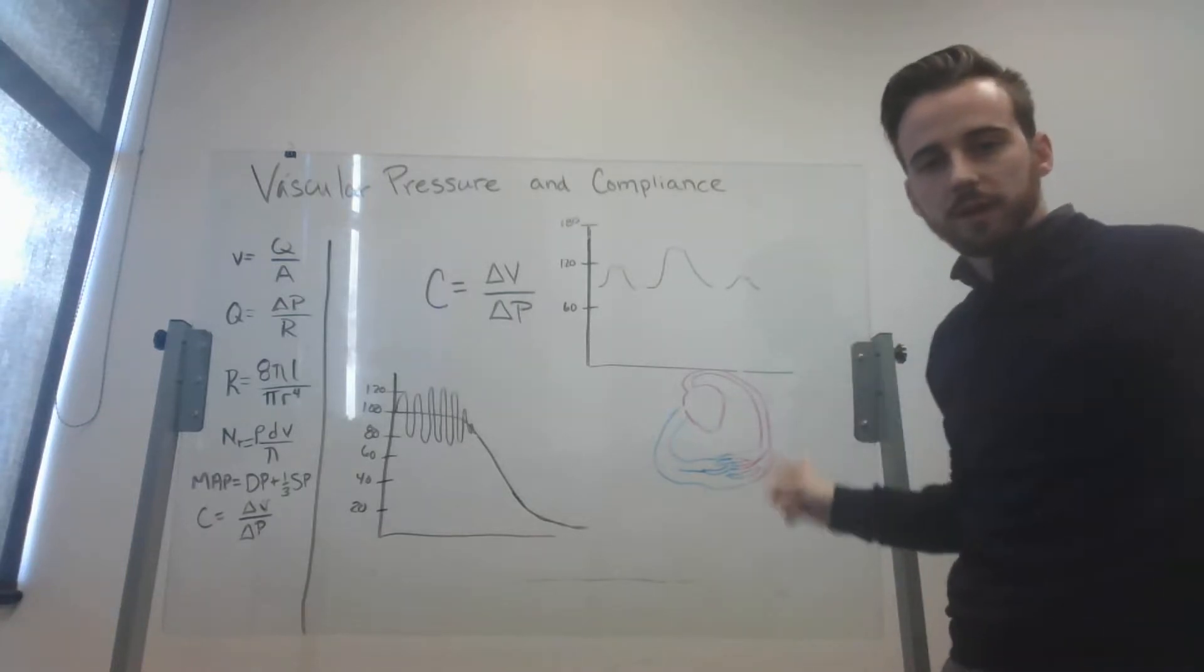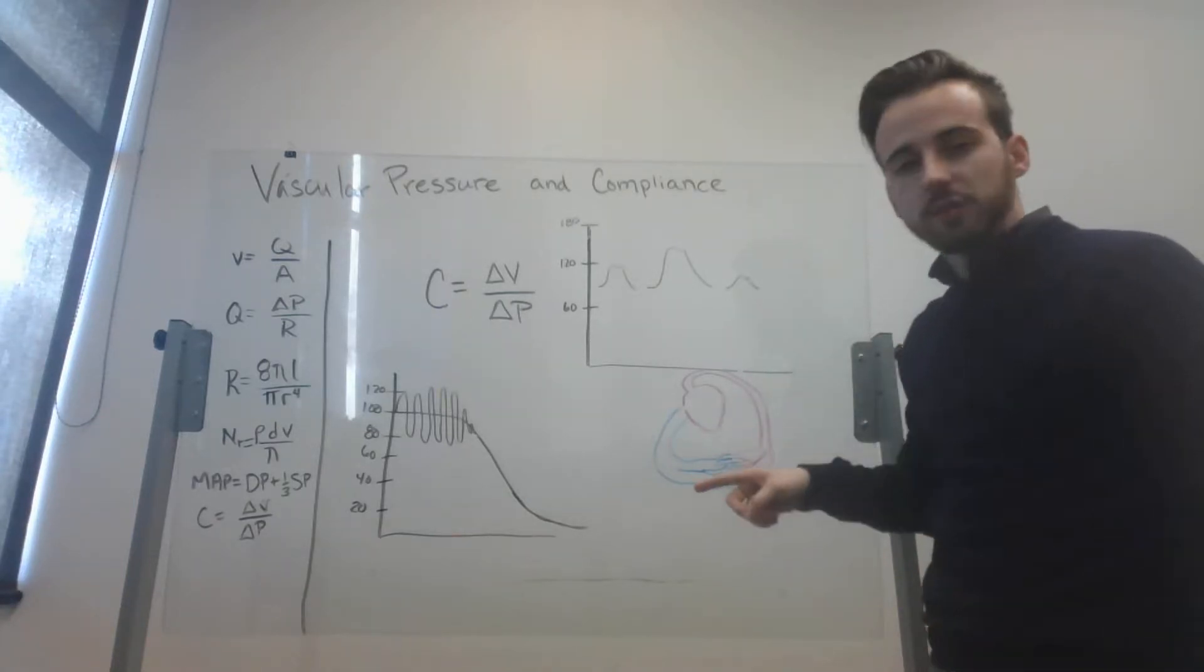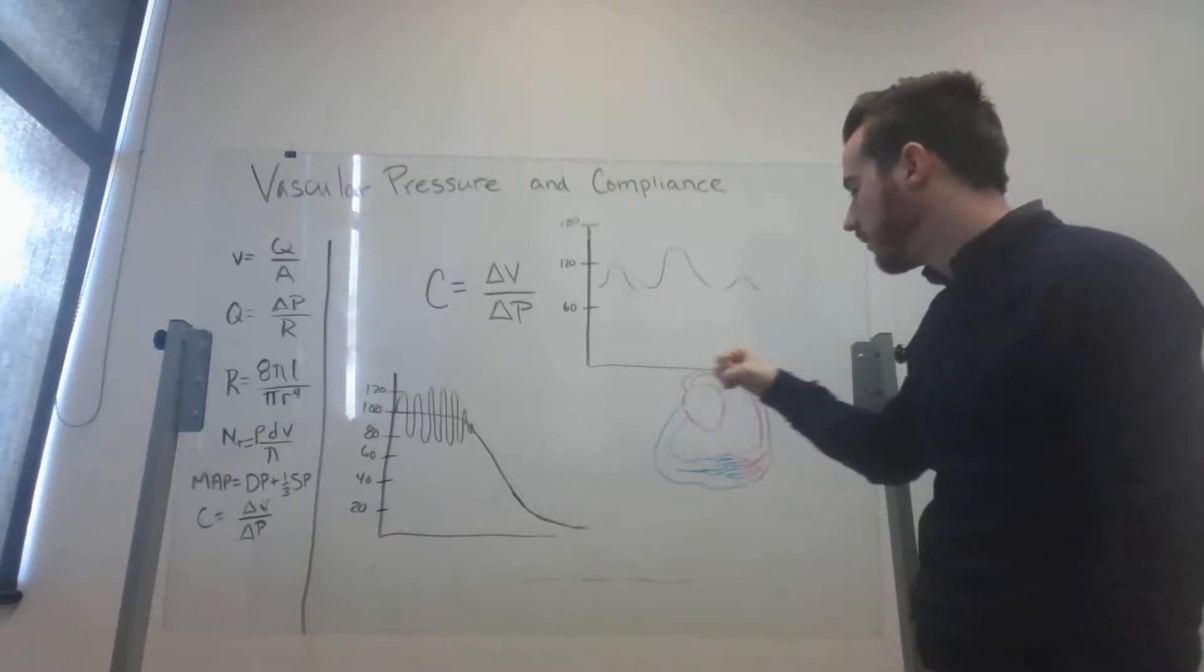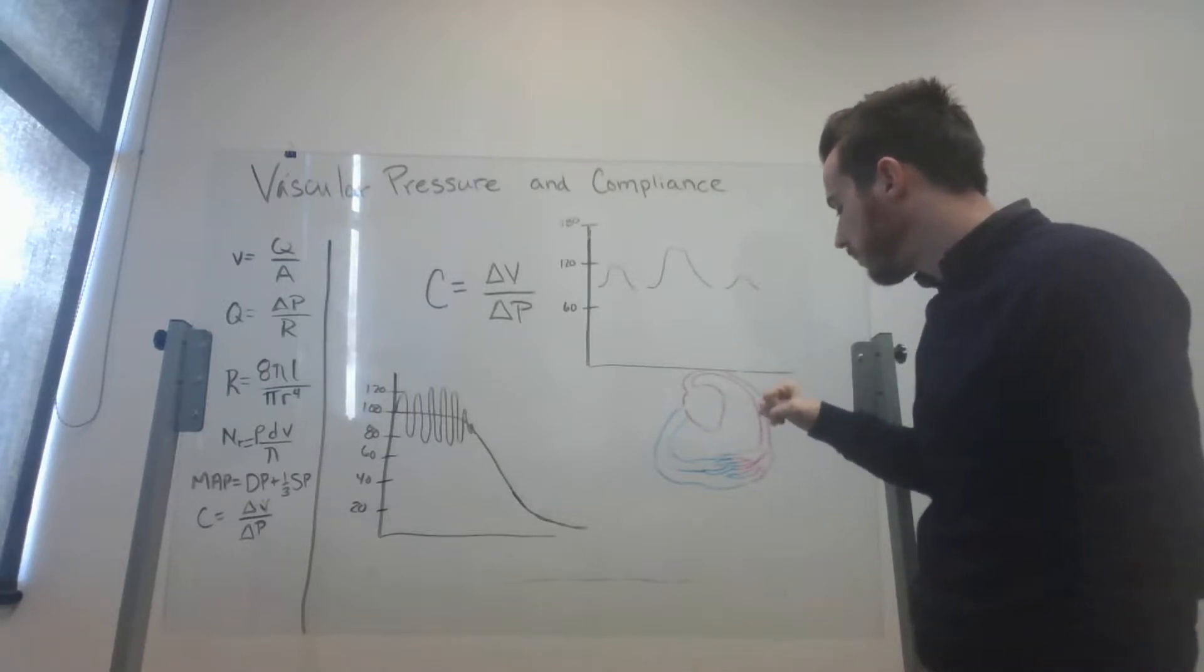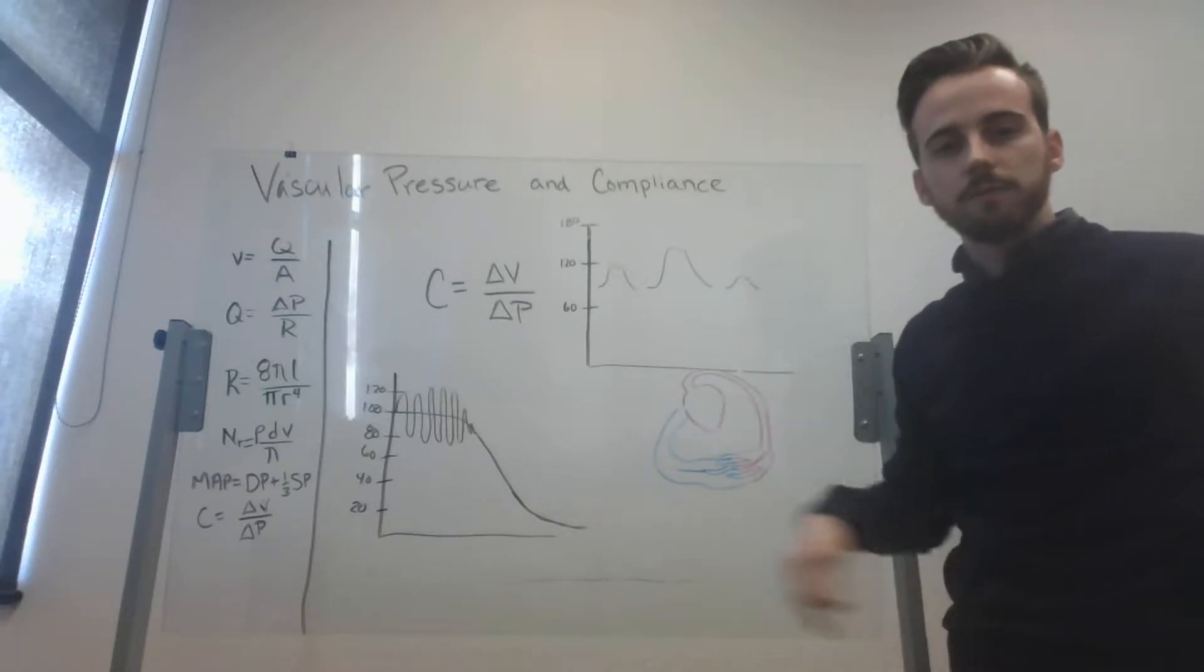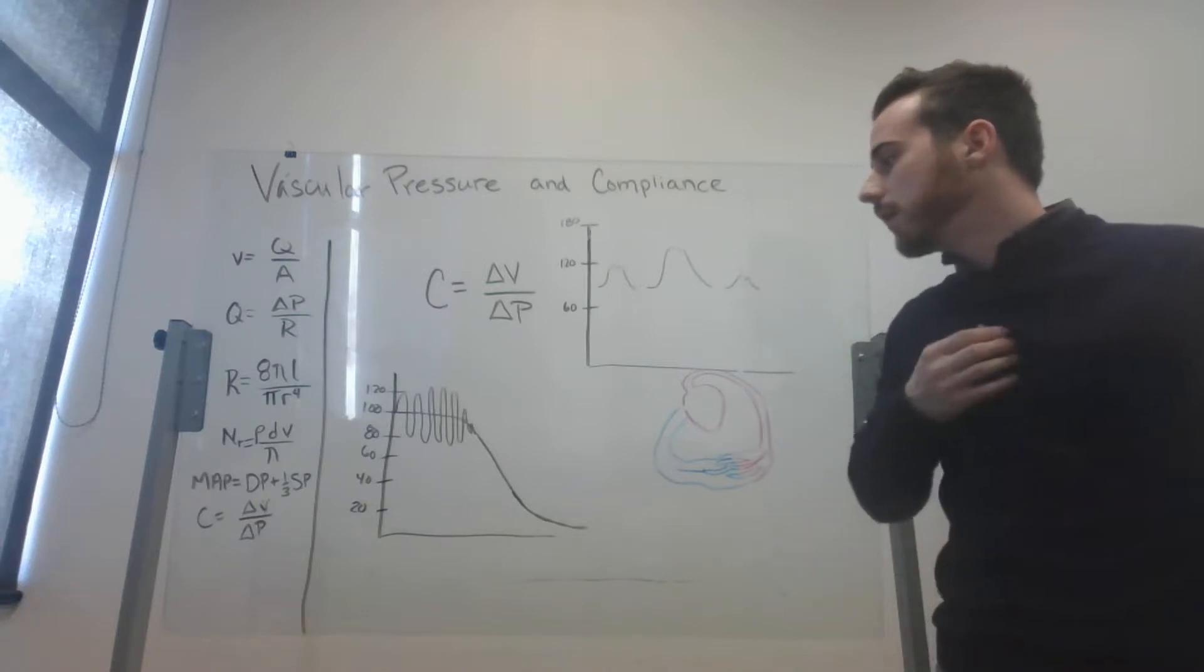This is my rough diagram of the circulatory system. We've got the systemic circulatory system. We've got our heart, our arteries, smaller arteries, arterioles, capillaries, venules, veins, vena cava back to the heart.